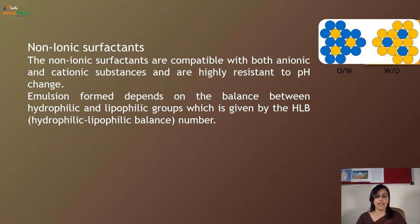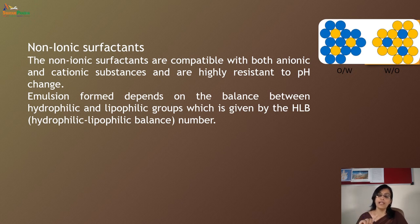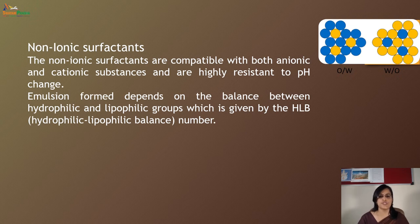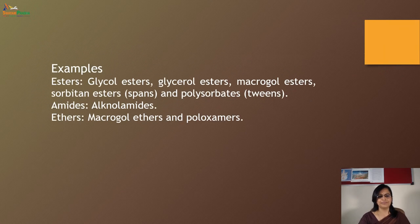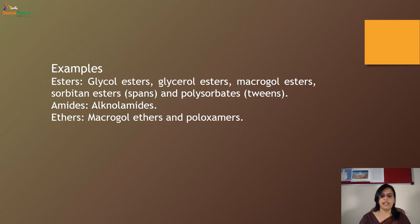Non-ionic surfactants are compatible with both anionic as well as cationic surfactants, and they are highly resistant to pH change. The type of emulsion formed depends on the balance between lipophilic and hydrophilic groups, which is given by the hydrophilic-lipophilic balance (HLB) number. Examples include glycol esters, glycerol esters, amides such as alkanolamides, and ethers such as macrogol ethers and poloxamers.